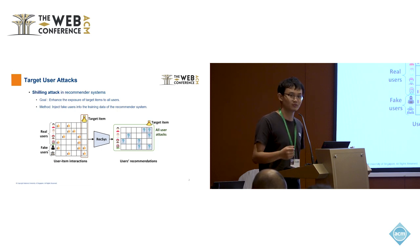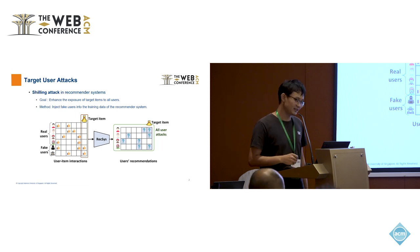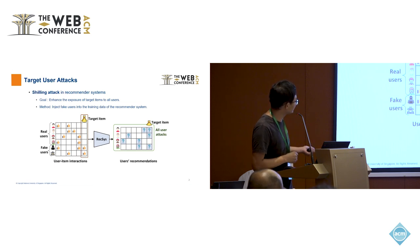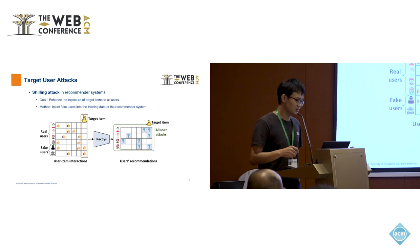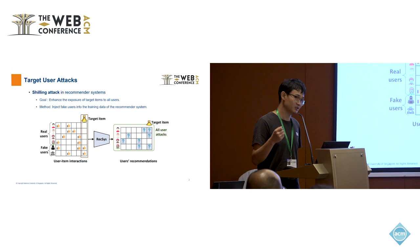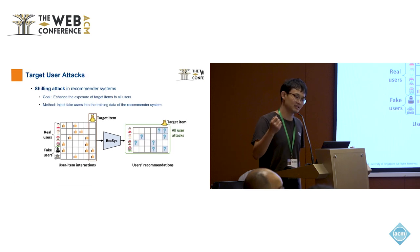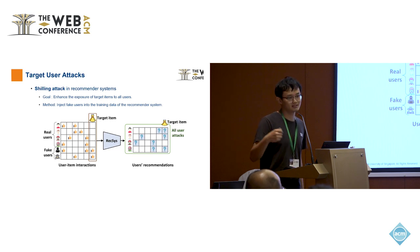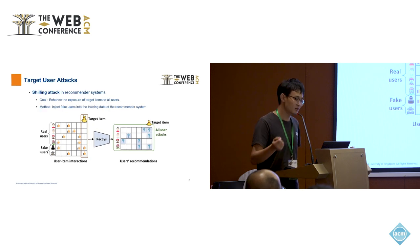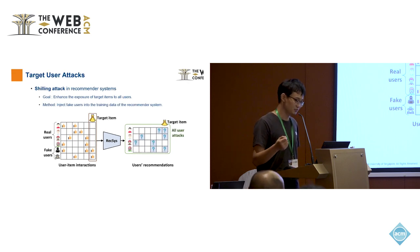We can promote our own content to more users and get more profit. The key idea is that we inject fake users into the training data of the system because most recommender systems consider user similarity — similar users will like similar items. So if one user has liked an item, another user with a similar history will be recommended that item. Based on this user similarity, we can tweak the recommender system to recommend the target item to more users.